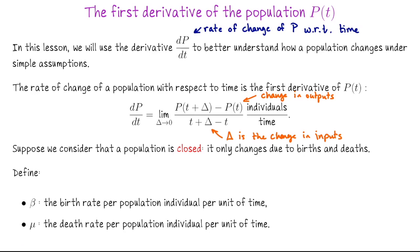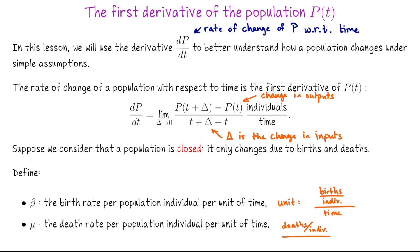Let's bring in some new notation. Let beta be the birth rate per population individual per unit of time. The unit for beta is a bit unusual: it's births per member of the population per unit of time. And then let mu represent the death rate per population individual per unit of time — similarly, it's the number of deaths per individual per unit of time.